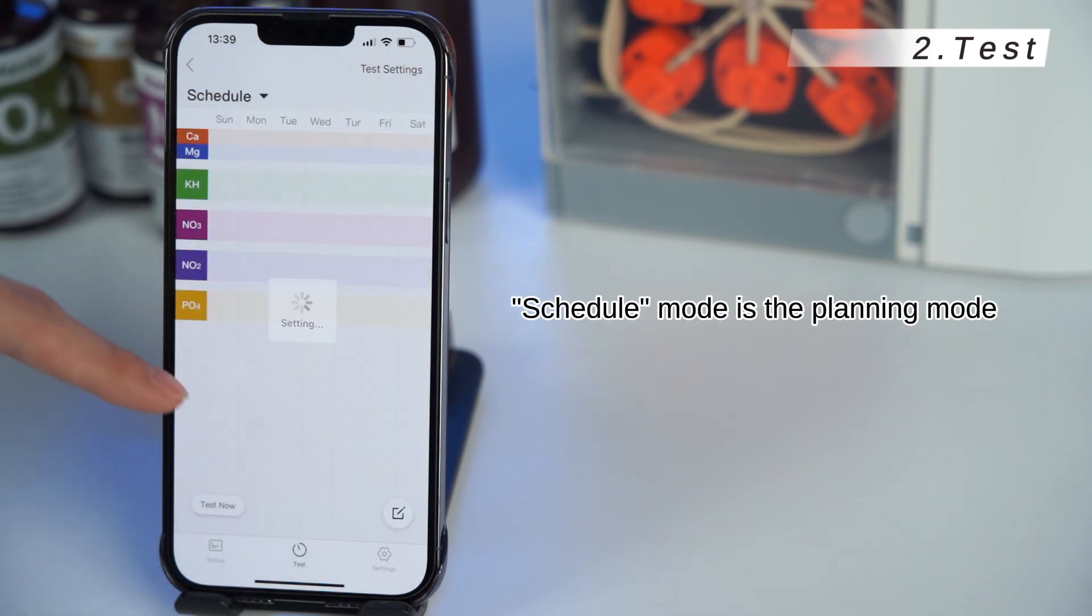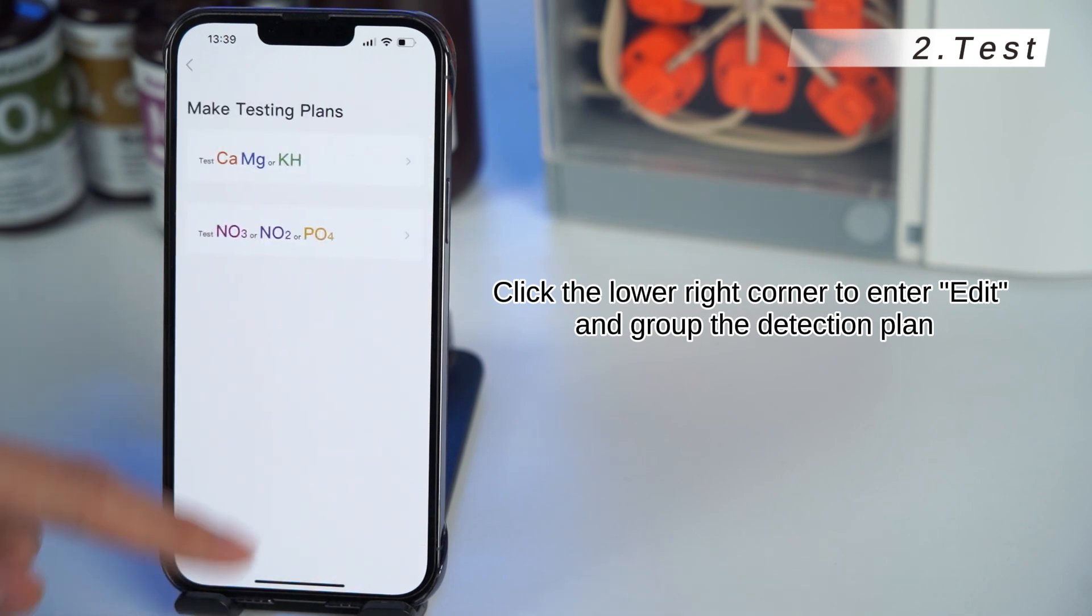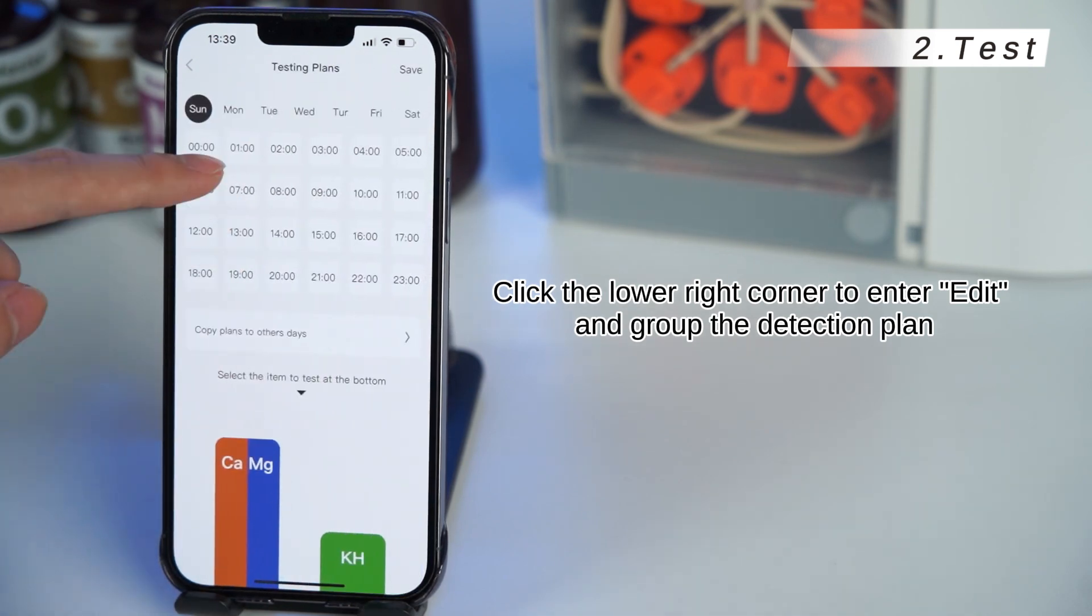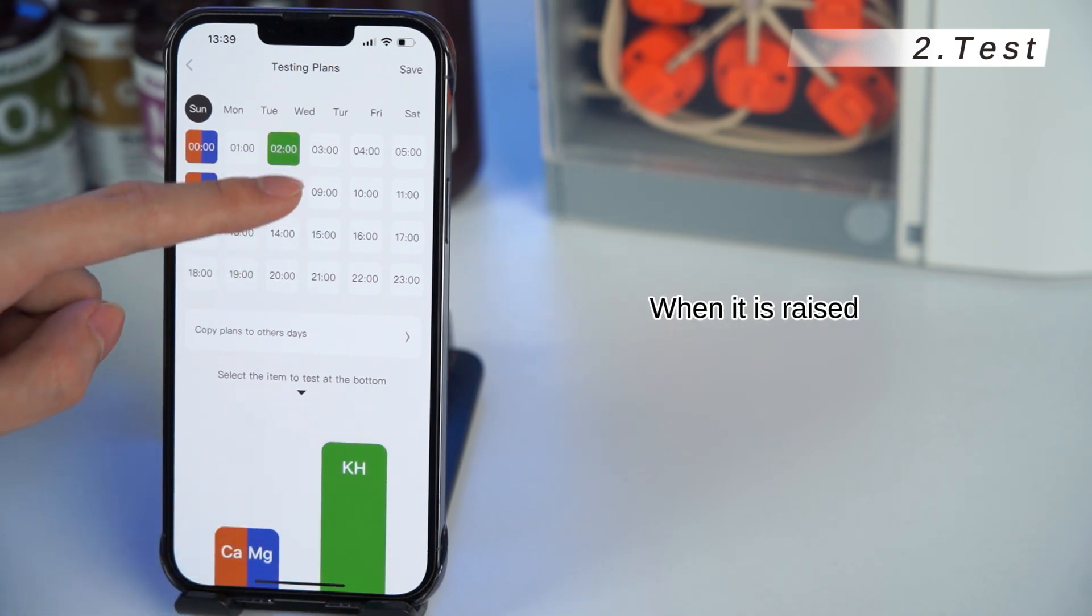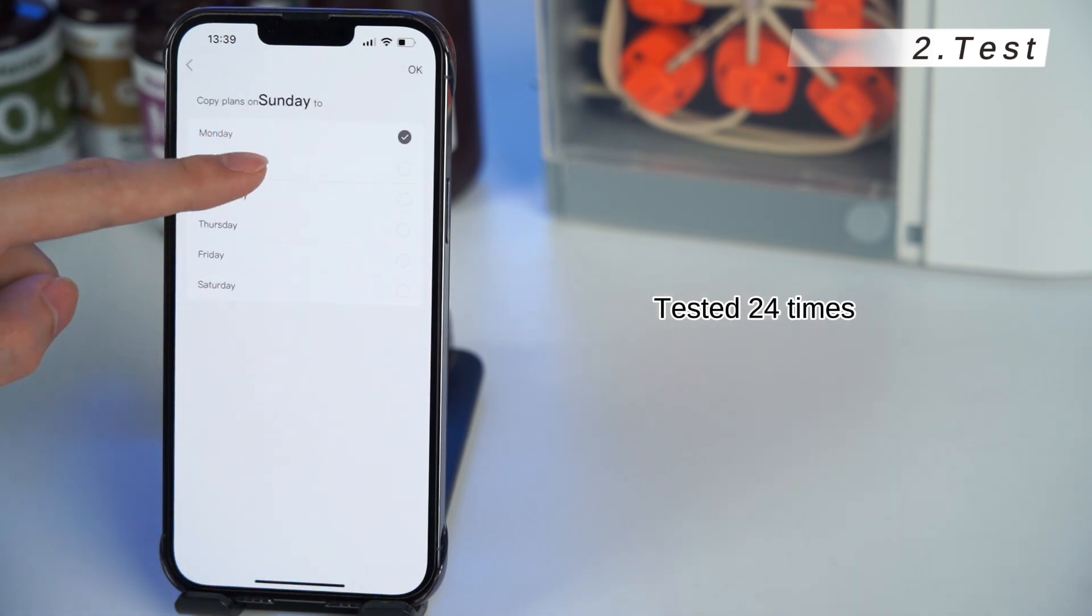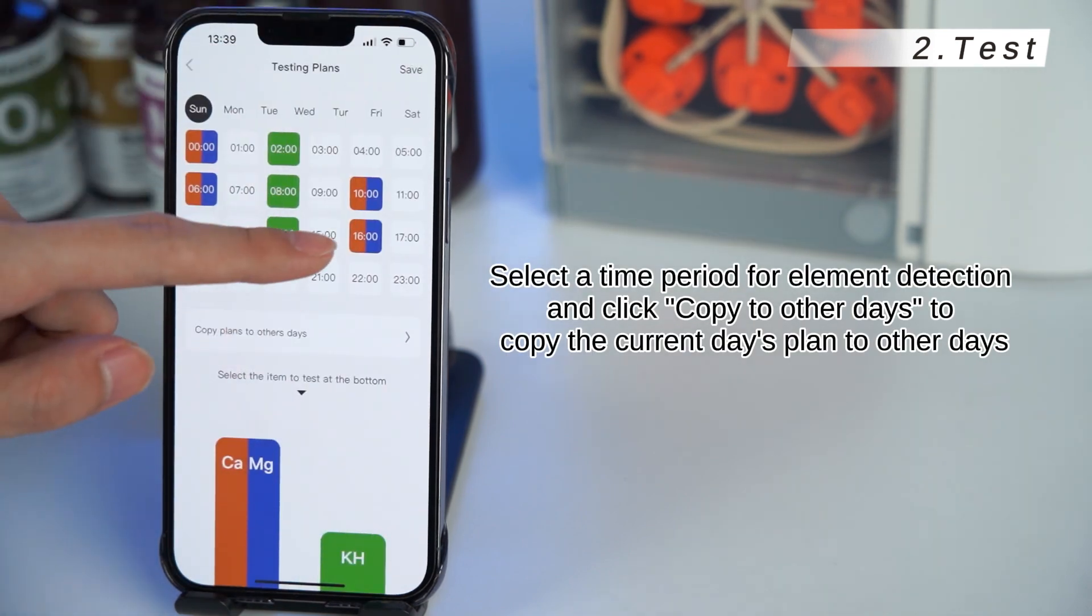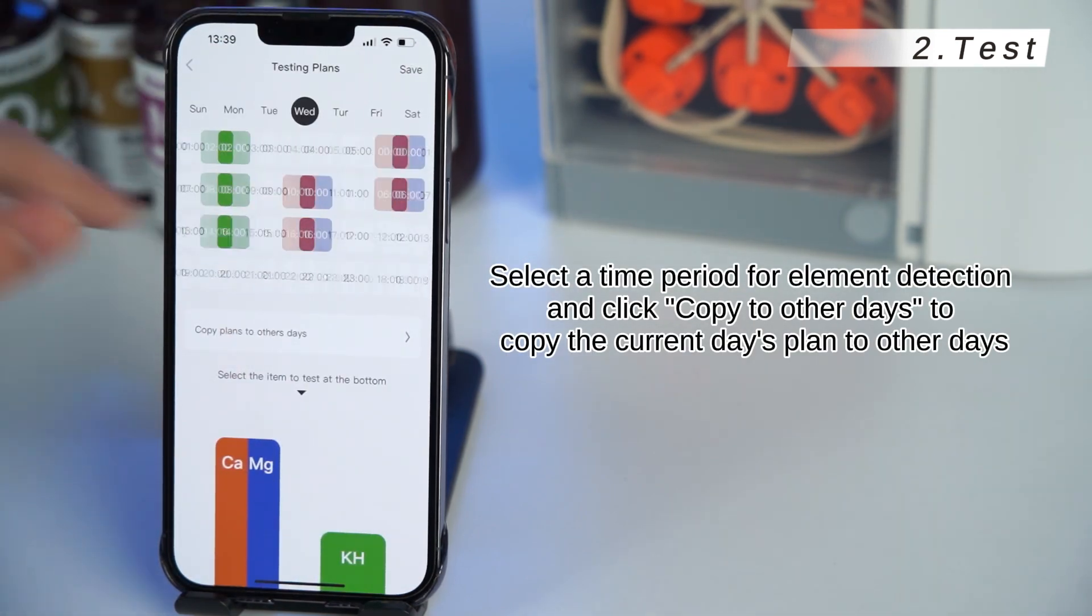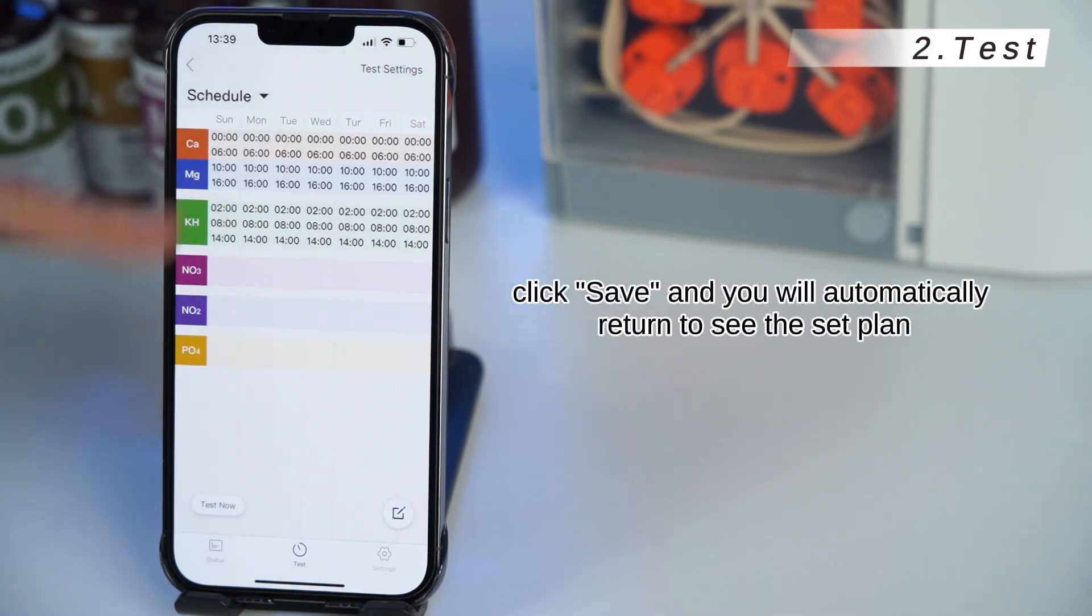Schedule mode is the planning mode, and it is also the automatic mode. Click the lower right corner to enter, edit, and group the detection plan. Click to enter the first group and select the detection element. The plan cycles on a weekly basis and can be set at most every day. Test it 24 times. Select a time period for element detection and click copy to other days to copy the current days plan to other days. After the settings are completed, click save, and you will automatically return to see the set plan.